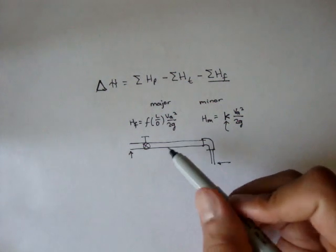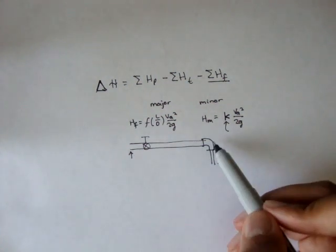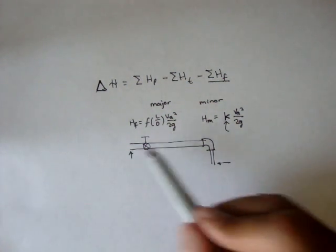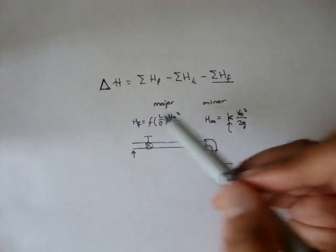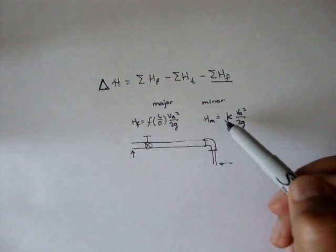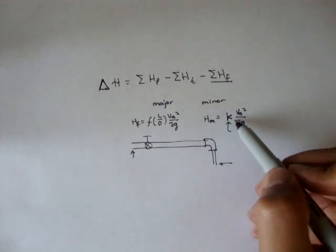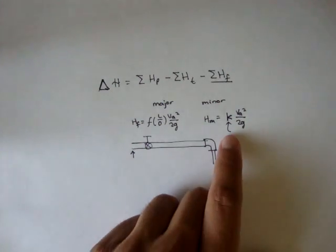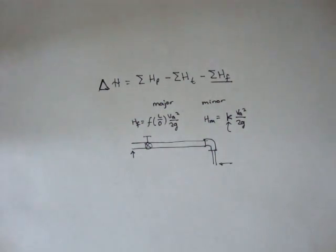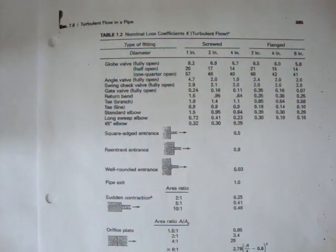And for each one of those devices, the elbows, the turns, the entrance, the exits, we summate all the major and minor losses. And for all the minor losses, we use this formula K times VA squared over 2G. Now, in order to figure out what that K is, we come to this table, and this table, every book is different, this is just the table for my book.